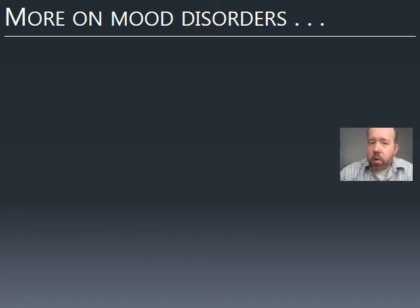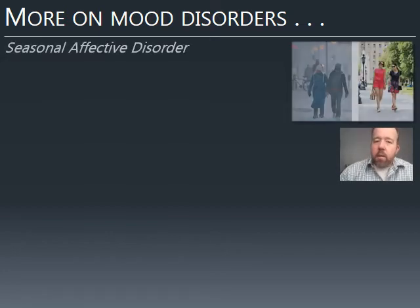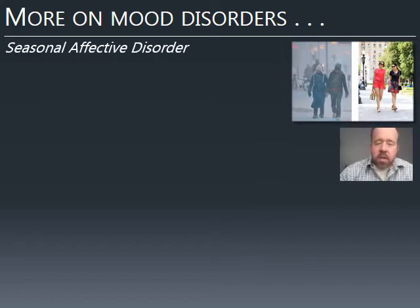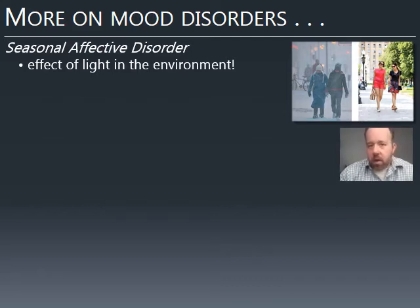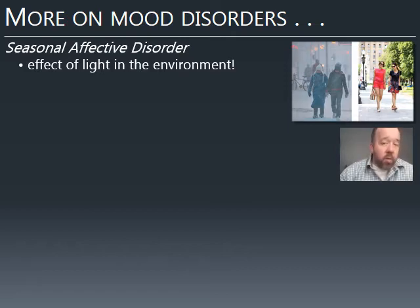There are other mood disorders as well. Seasonal affective disorder has symptoms of depression linked to the changing of the seasons, particularly the amount of light available. As days get shorter, those depressive symptoms come at higher risk, and people at higher latitudes are at higher risk than those closer to the equator — another environmental impact on the expression of mental disorders.